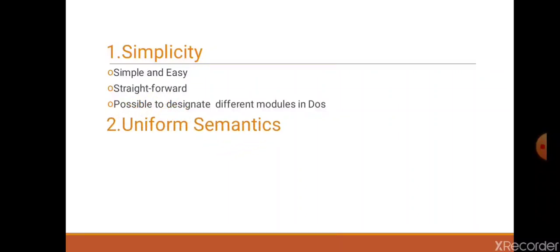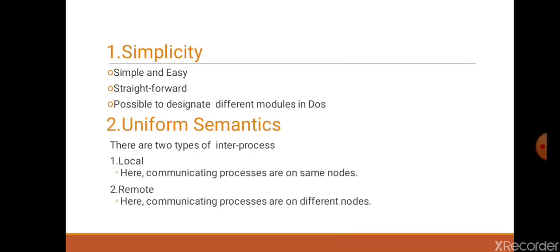Second feature is uniform semantics. We know that for better performance, the semantics should be clean and simple, so message passing system has uniform semantics. Basically there are two types of inter-processes: first is local and second is remote. In local, the communicating processes are on the same node, and in remote, the communicating processes are on different nodes.